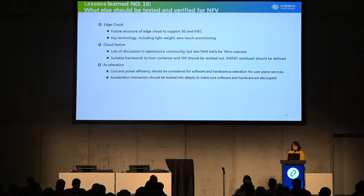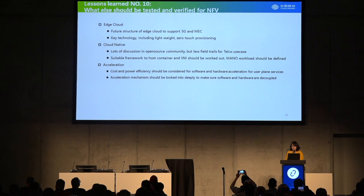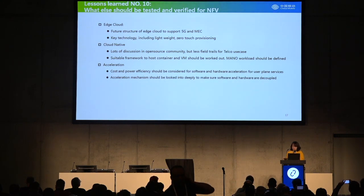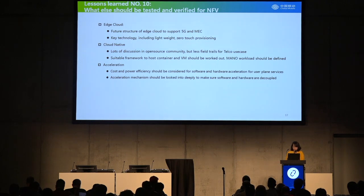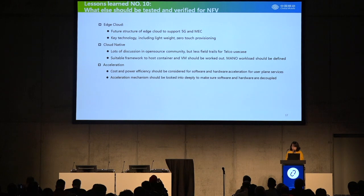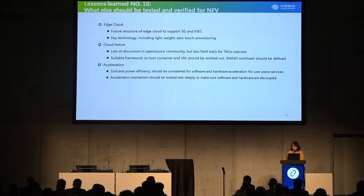Lesson ten — what else should we test? This is also what we would like to conduct in the following phases of the NovoNet experiment network. First is 5G — we see that there are still lots of technical gaps at the edge, like lightweight control planes and accelerations, that should all be tested in some experiment network to figure out the gaps. Another thing we should look into is cloud native — lots of discussion in the open-source community but actually very few trials for telco use cases. A suitable framework to host containers and VMs should be worked out, and the related MANO workload should also be defined. Acceleration cost and power efficiency should be considered for software and hardware acceleration for user plane services, and we see huge gaps in acceleration abstraction layers, which is something the open-source community should also work on.